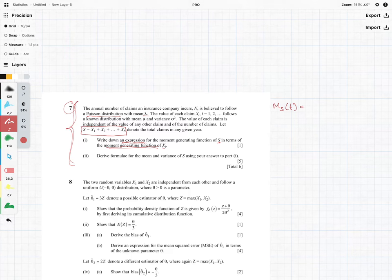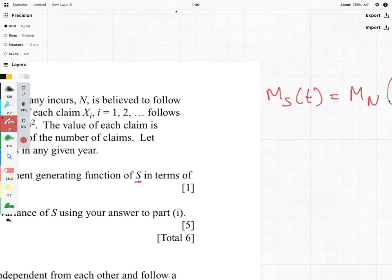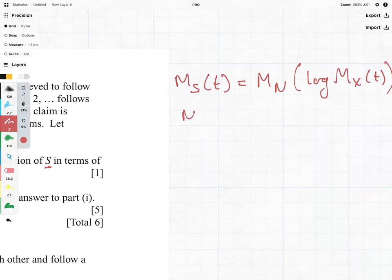So Ms(t) is going to be equal to MN of log Mx(t). Okay, we're getting that straight from the theory. That is something that we would have learned in the earlier videos and we should be nice and comfortable with it. Now, what we know is that N is following the Poisson with lambda as its parameter, which means that we know MN(y)